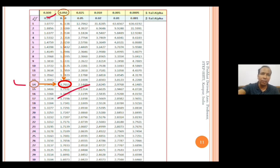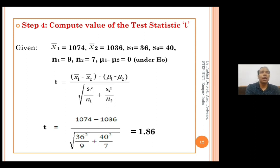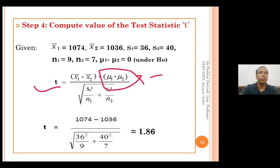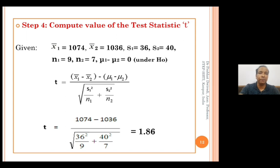This critical value of t will be compared with the calculated value of t. In step 4, we compute the T-statistic using the given values: x̄₁ = 1074, x̄₂ = 1036, S1 = 36, S2 = 40, N1 = 9, N2 = 7, and μ₁ − μ₂ = 0 under the null hypothesis. Substituting these values into the T-statistic formula, the calculated value of t is 1.86.